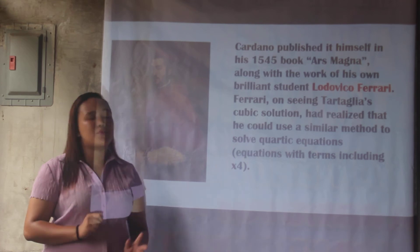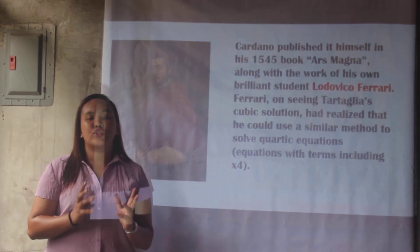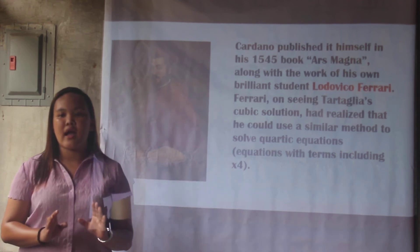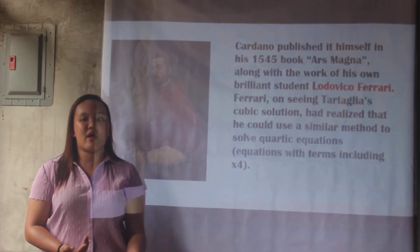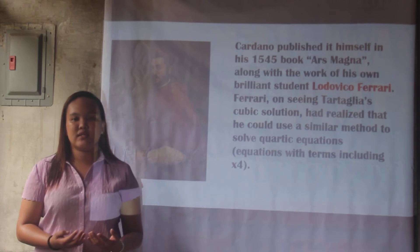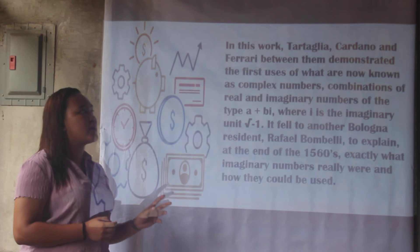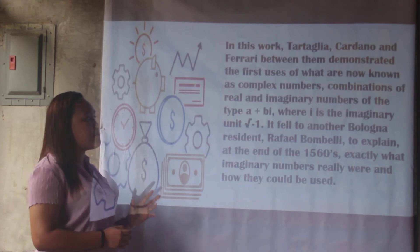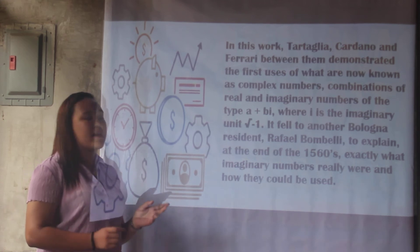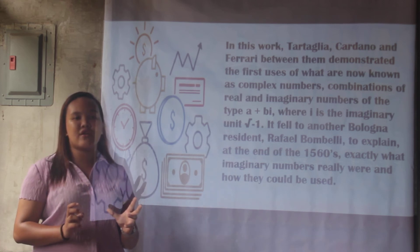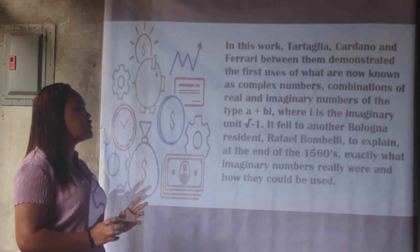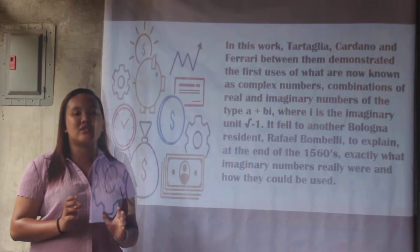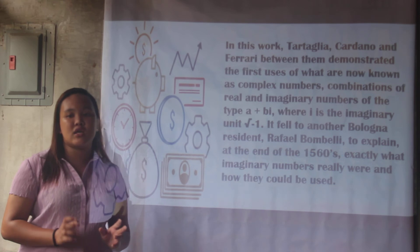Ferrari, upon seeing Tartaglia's cubic equation solution, realized he could use a similar method to solve quartic equations. Together, Tartaglia, Cardano, and Ferrari demonstrated the first uses of what are now known as complex numbers — combinations of real and imaginary numbers of the form a + bi, where i is the imaginary unit equal to the square root of negative one. It fell to another Bologna resident, Rafael Bombelli, to explain in the late 1560s exactly what imaginary numbers were and how they could be used.